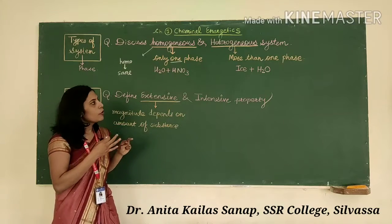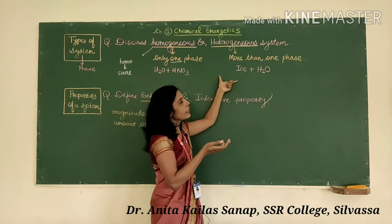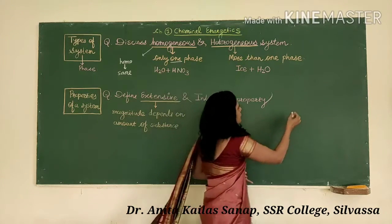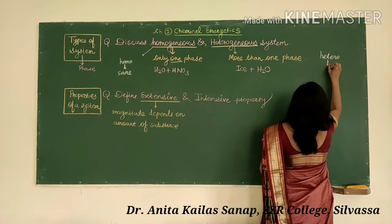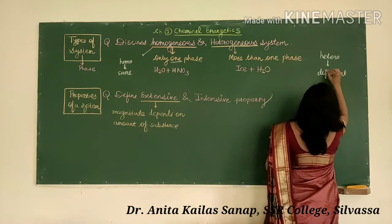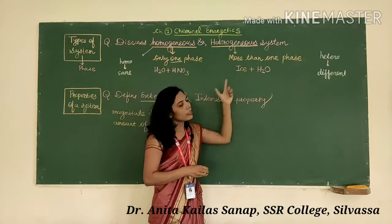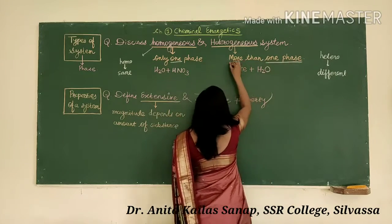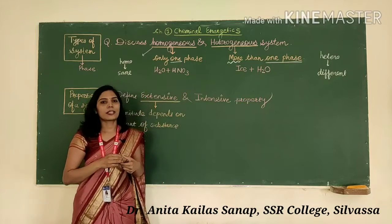The system where there is the presence of more than one phase is called heterogeneous. 'Hetero' means different. So whenever there is a presence of more than one phase in the system, it is called a heterogeneous system.